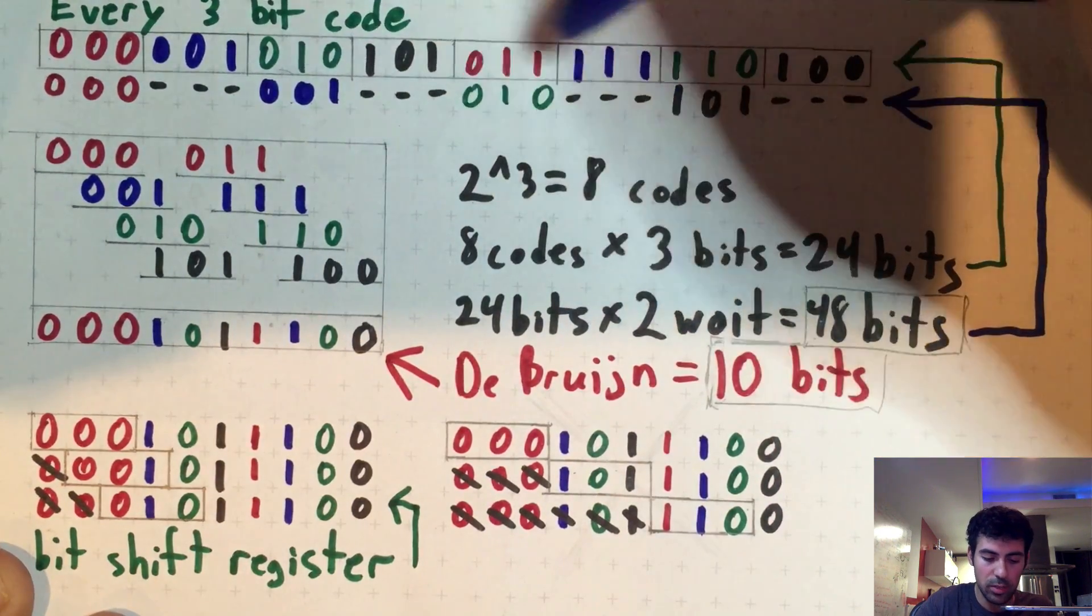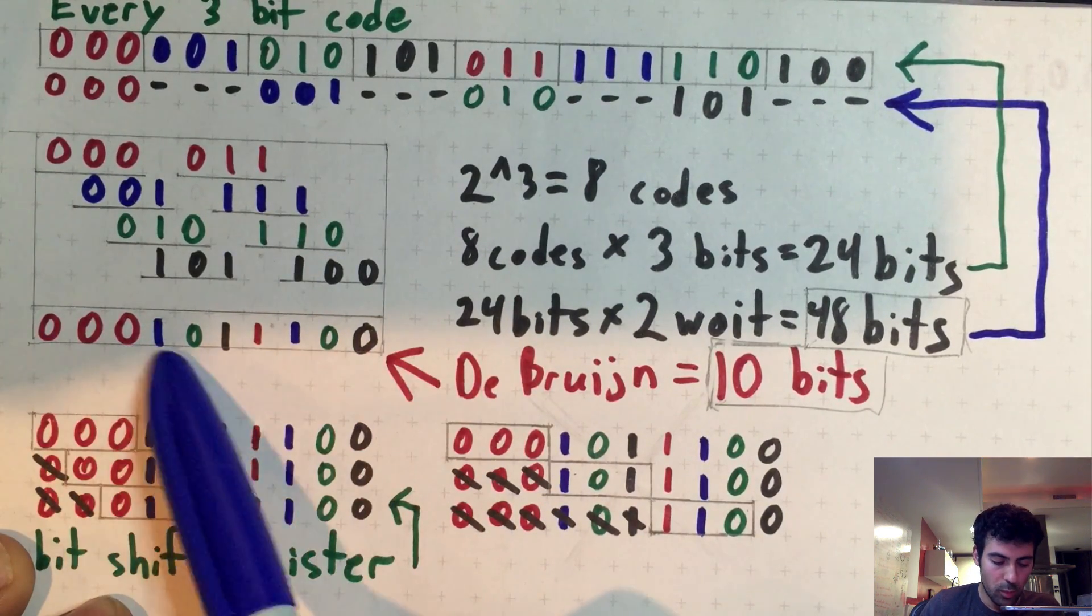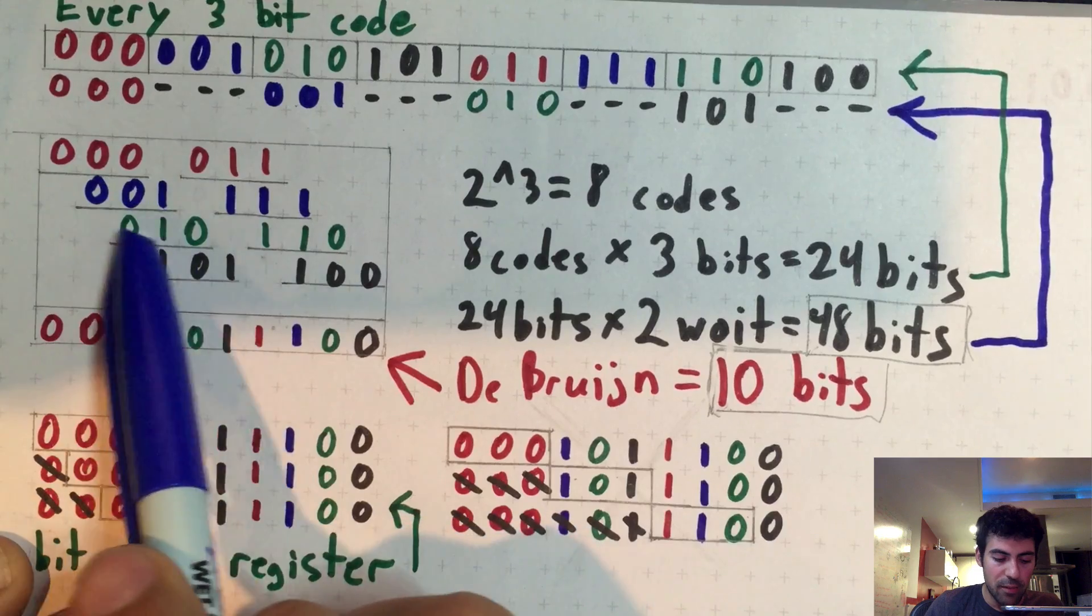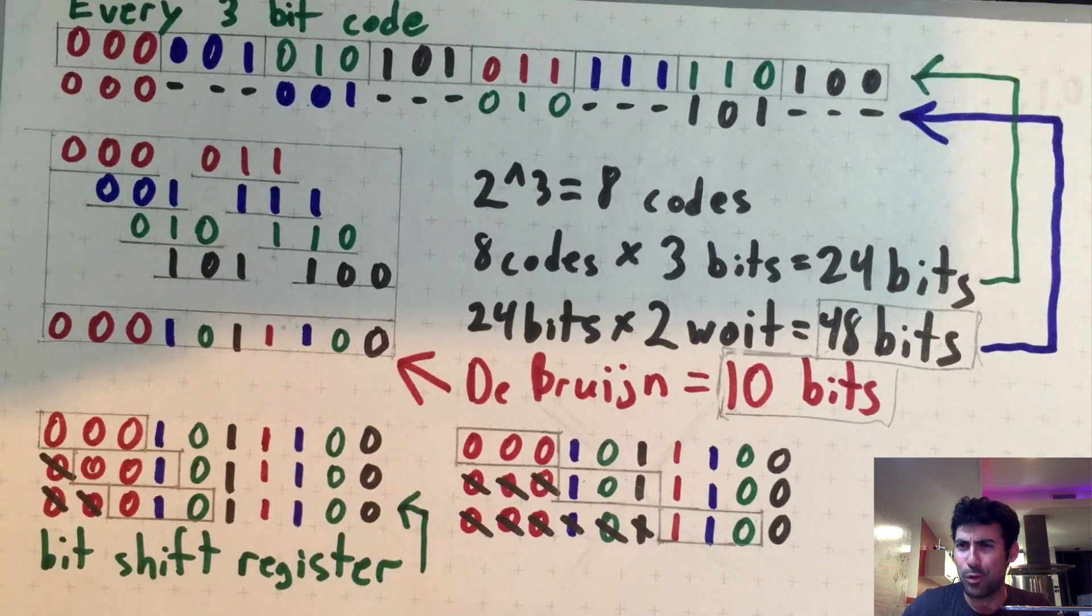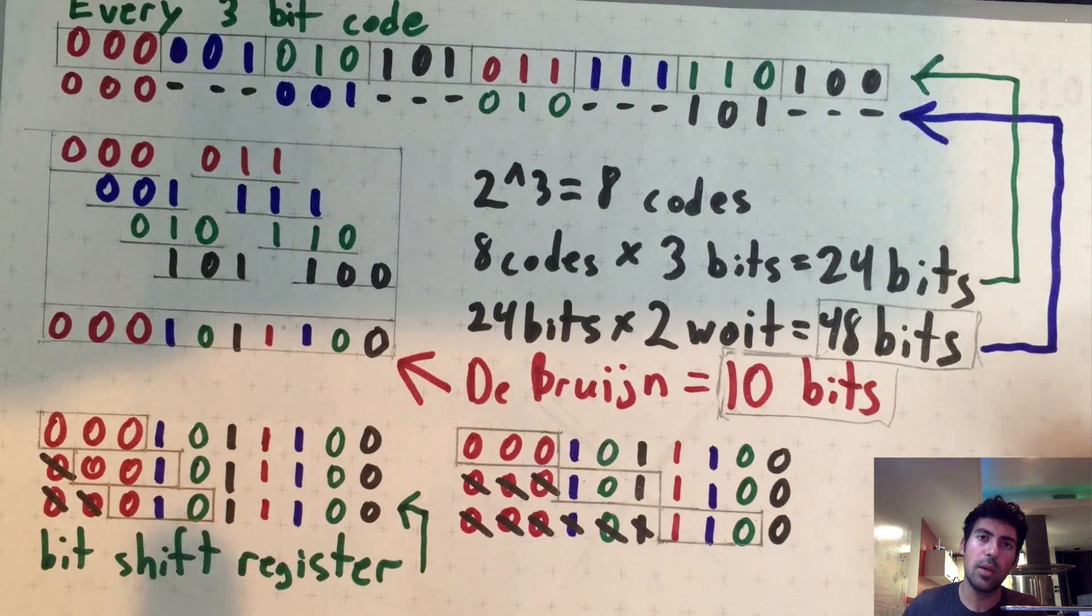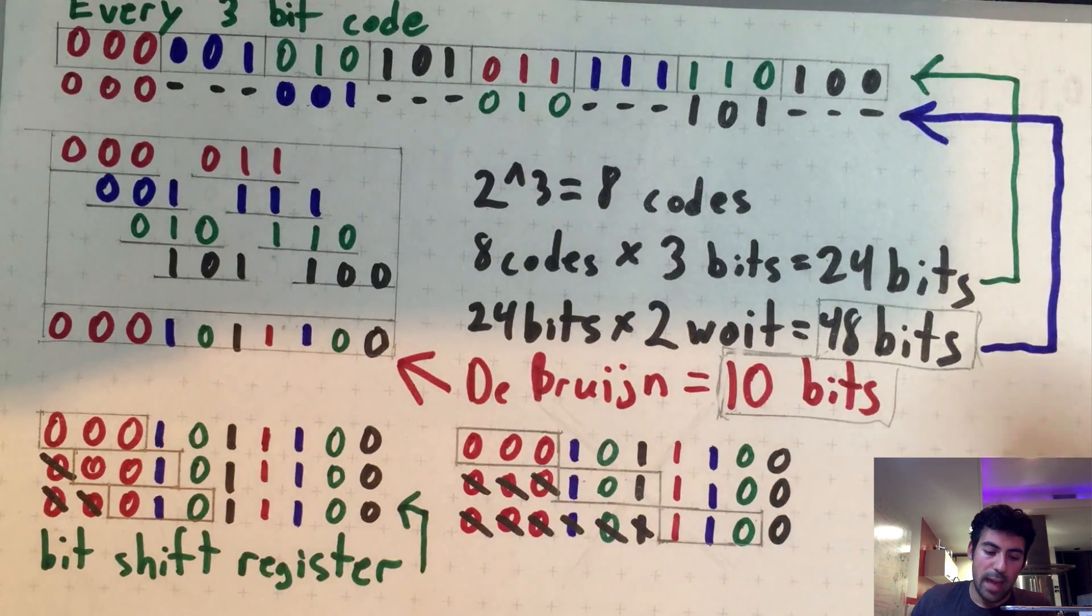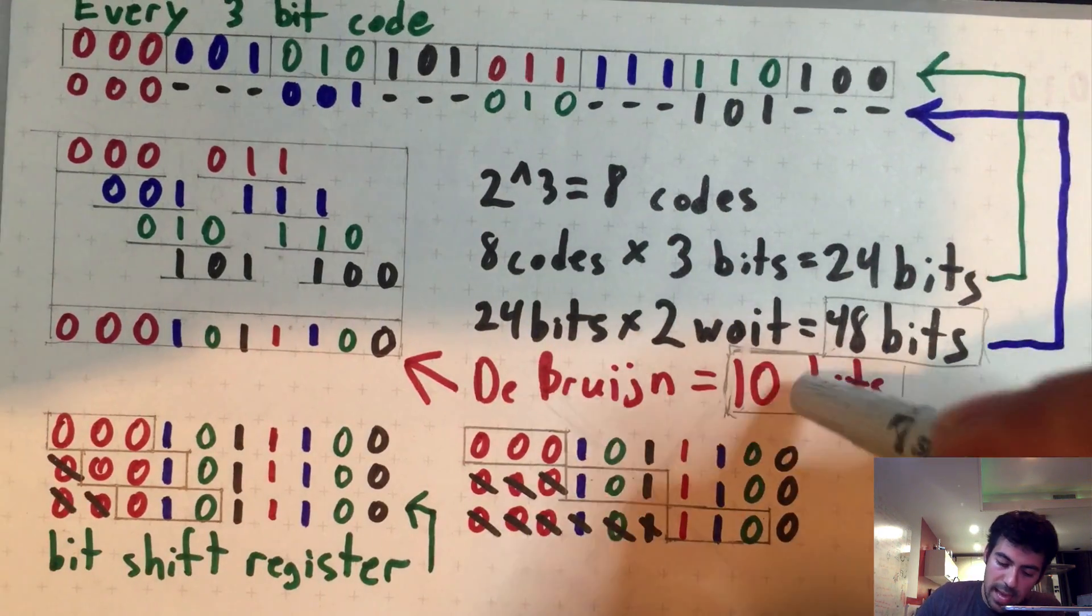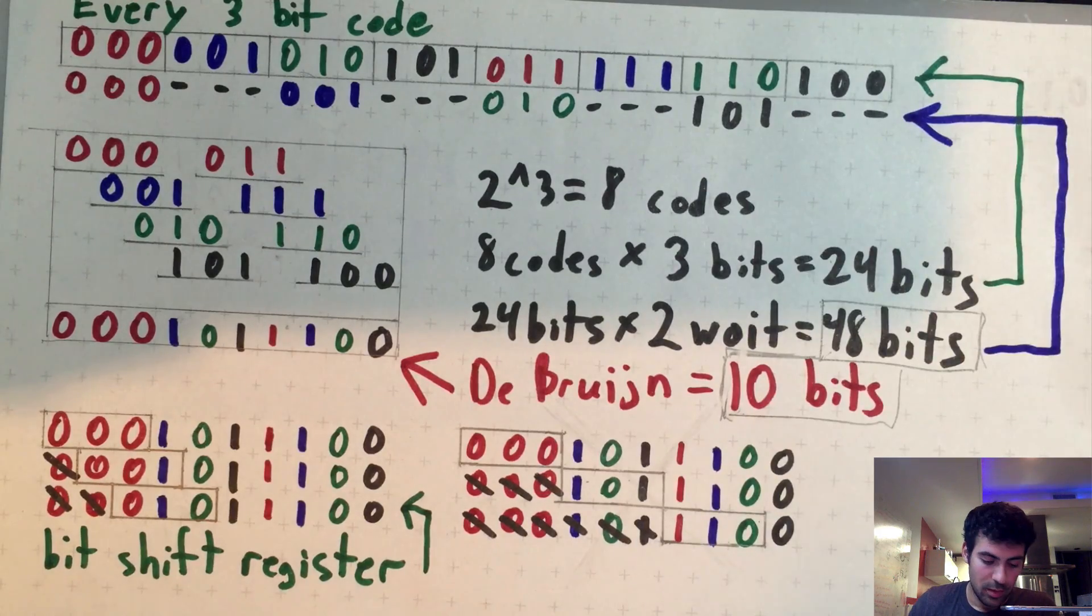Now, if we take all of these 3-bit codes, all 8 of them, and overlap them, we get this string right here, which is 0, 0, 0, 1, 0, 1, 1, 1, 0, 0. It's only 10 bits. However, it covers overlapping every single possible 3-bit code. This is called the De Bruijn sequence. He's a mathematician who found an algorithm to create an overlapping sequence of numbers that produces every possible combination or permutation of those numbers without actually having to essentially transmit or write them out twice. So with this, we can actually send 10 bits to the garage and produce all 24 bits of the code, which is awesome.